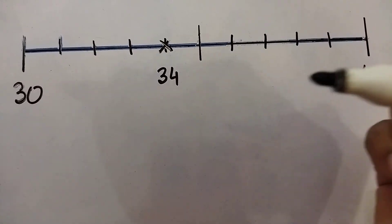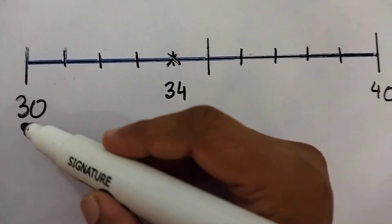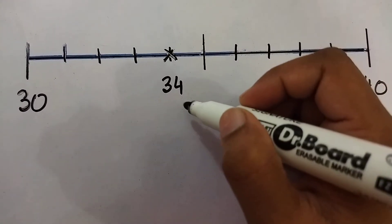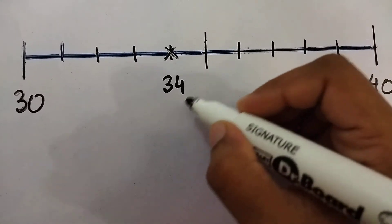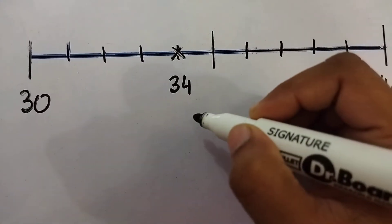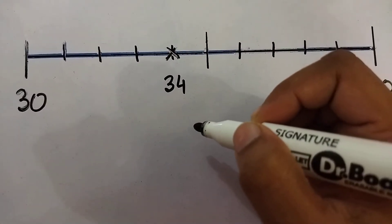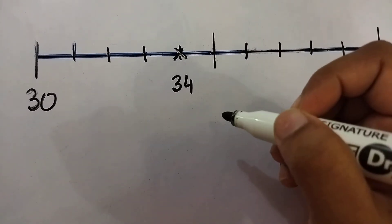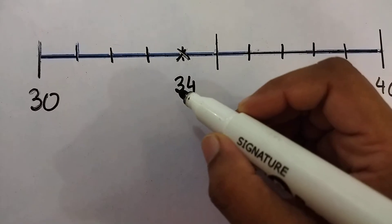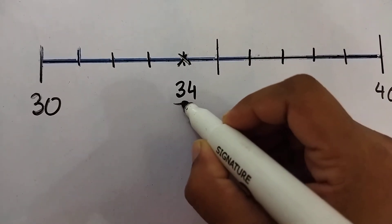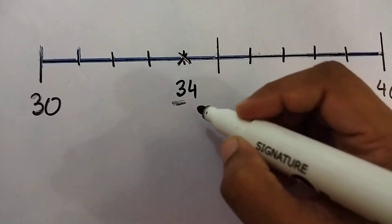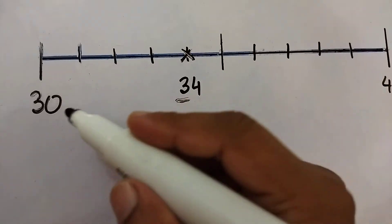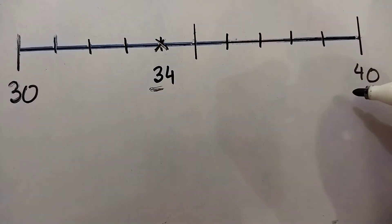Here you can see we have the number 34, and we need to find out where it lies. 34 is a number, and the first thing is to tell which number is between the two nearest tens. If we talk about the tens digit, it is 3, that means 30. So the two surrounding tens are 30 and 40.